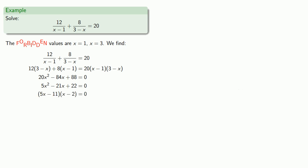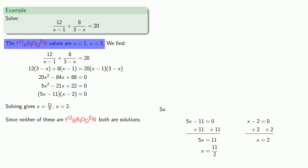And so we have a product equal to 0, so one or the other factor must be 0. Either 5x minus 11 equals 0, and we solve that... And so we have our two solutions. Neither of these are forbidden values, so both are solutions.